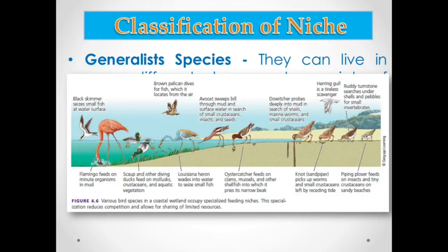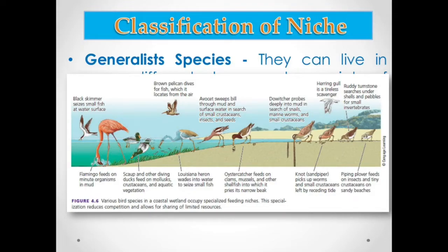This figure shows various bird species found in coastal wetlands. These shorebirds are also examples of specialist species — they feed on crustaceans, insects, and other organisms found on sandy beaches and their adjoining coastal wetlands.